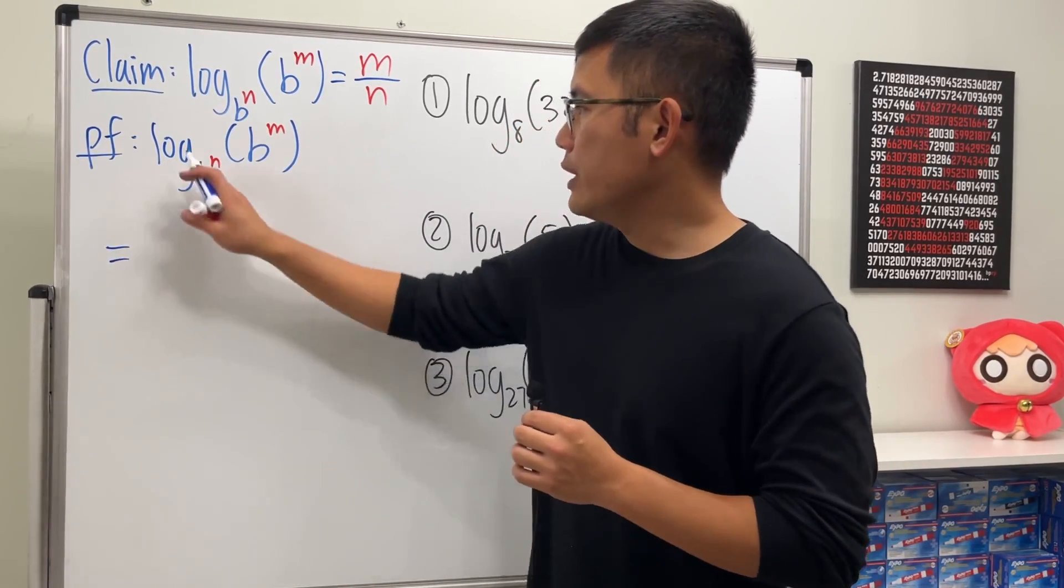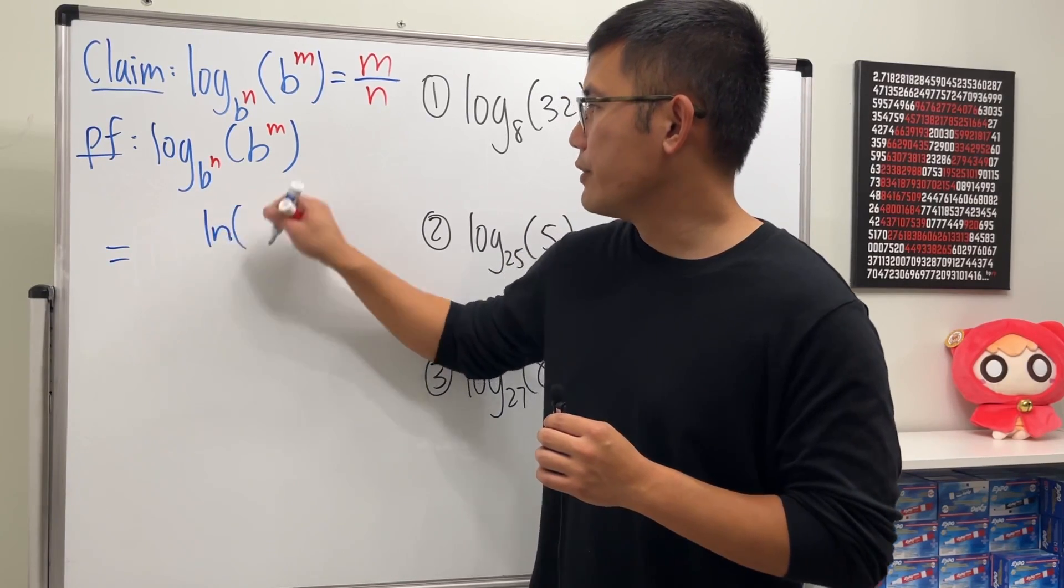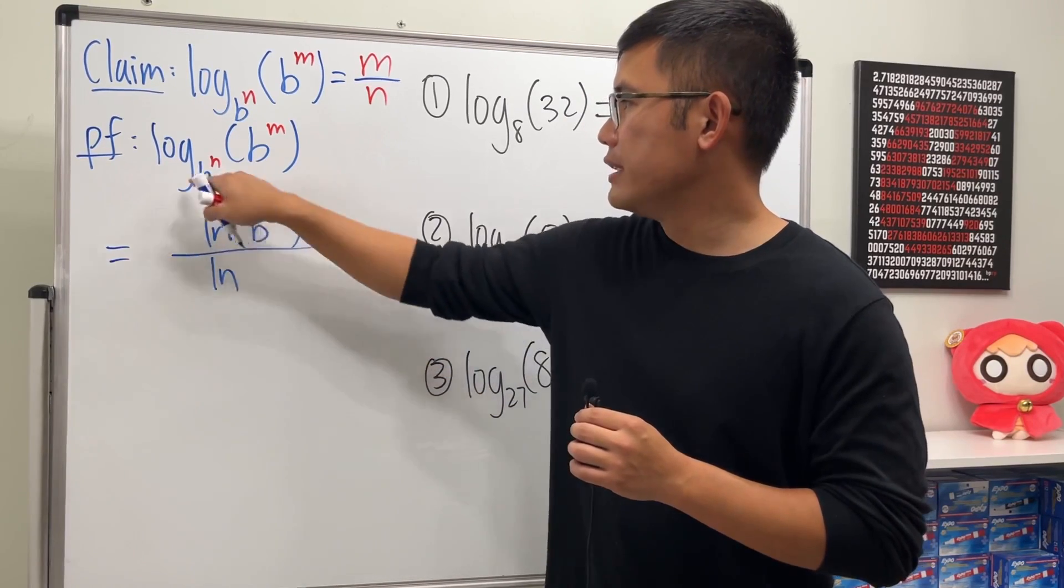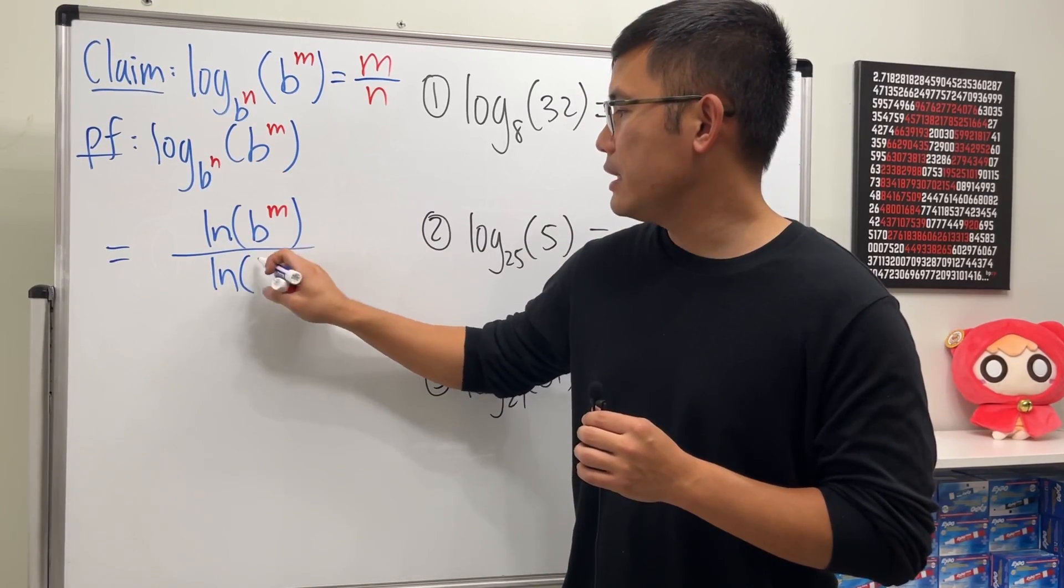Let's use natural log. So we can write this as natural log of the input, which is b^m, over natural log of the base, which is b^n.